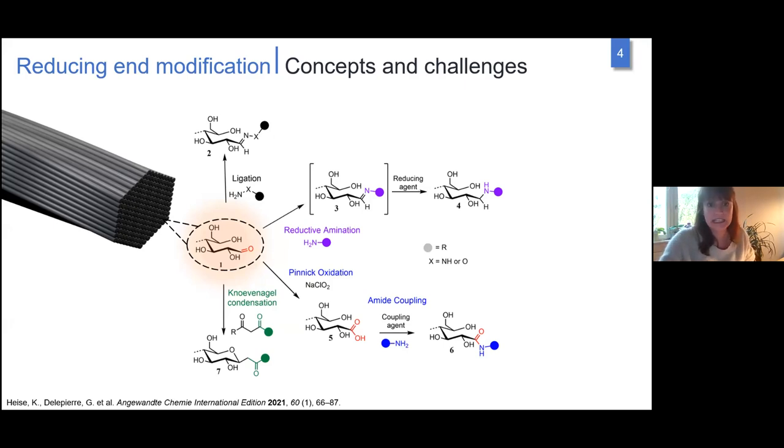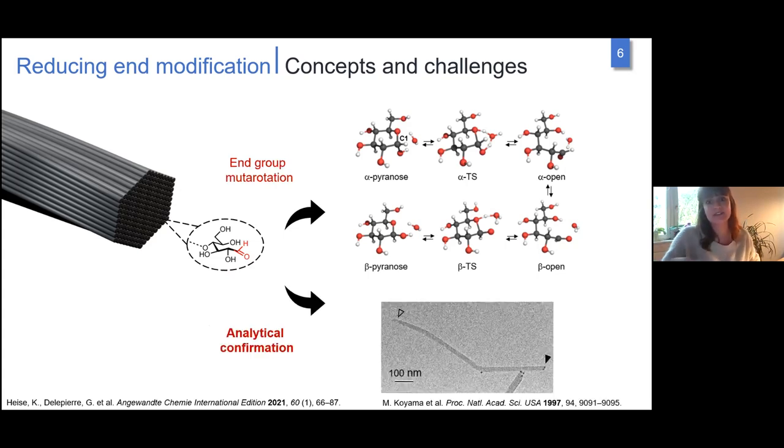A fourth pathway we published in 2019 is selective condensation by the Knoevenagel condensation on the reducing end groups. This sounds easy, but we shouldn't forget that this reducing end aldehyde is in equilibrium with closed hemiacetal, and the equilibrium is heavily on the hemiacetal side. We need chemistry that activates this reducing end group.